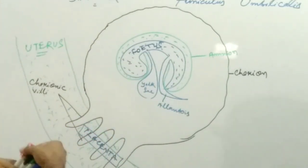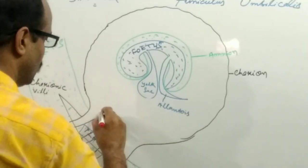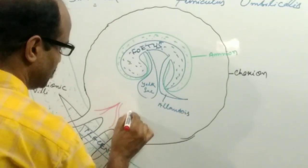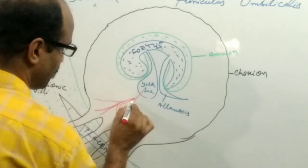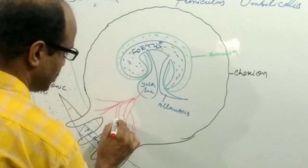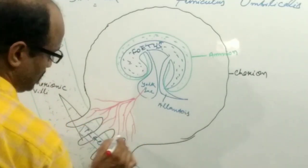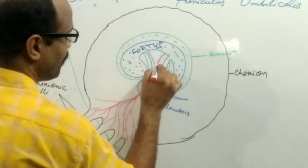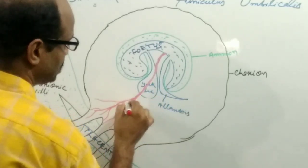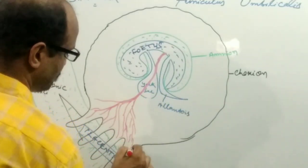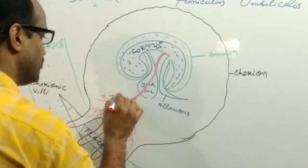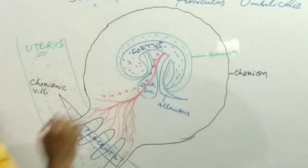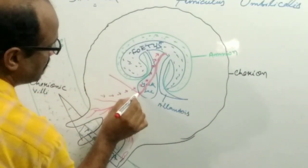At that time blood vessels appear from the placenta to the fetus. There is one vein that develops, and this vein supplies oxygenated blood and nutrient-rich blood to the fetus. This is the vein which develops from the placenta and supplies oxygen and nutrient-rich blood to the fetus. It is known as the umbilical vein.